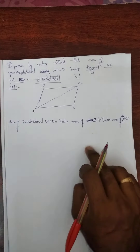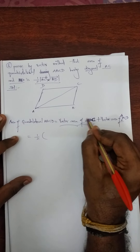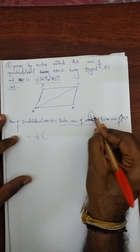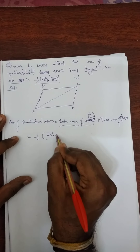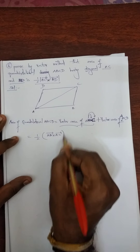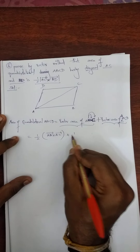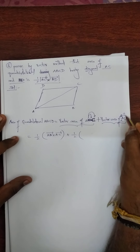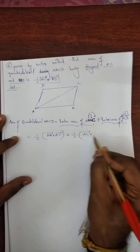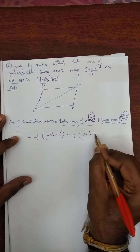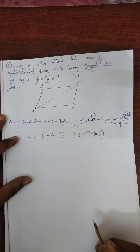Therefore, vector area of a triangle is nothing but the formula 1/2. Open the bracket: vector area of triangle ABC is 1/2 (AB vector cross AC vector). Plus vector area of triangle ACD is nothing but 1/2 (AC vector cross AD vector).